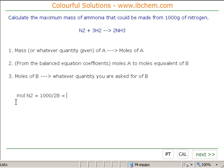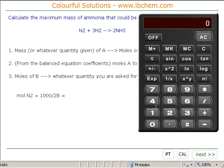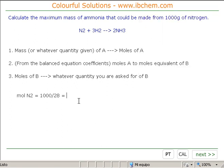OK, what does that come to? Well, simply go to a calculator. 1,000 divided by 28. And that comes to 35.7. Alright, 35.7. So we have 35.7 moles of nitrogen.